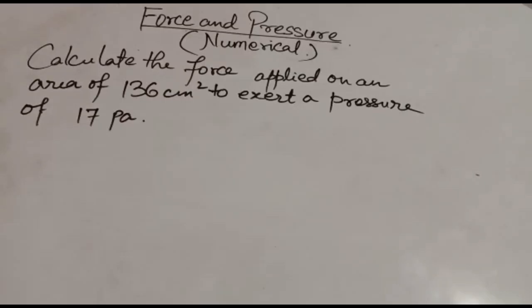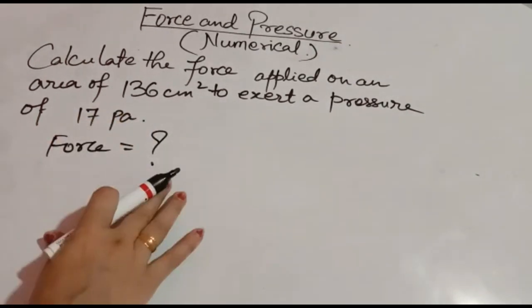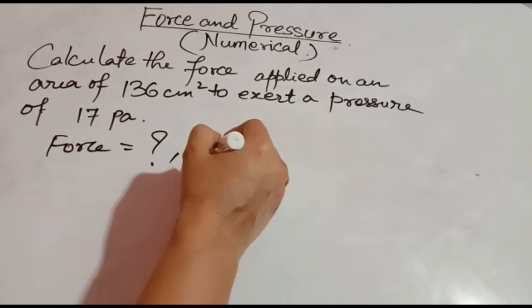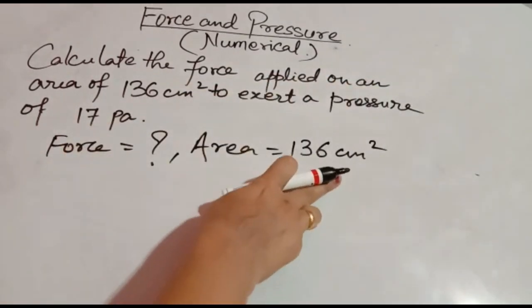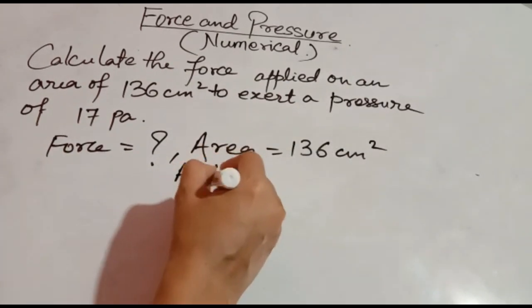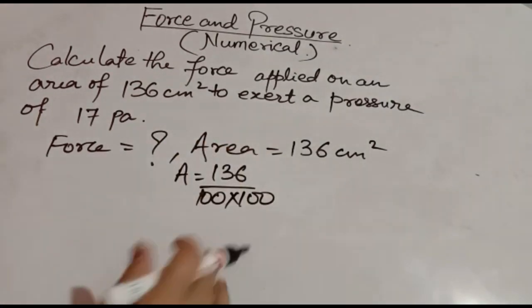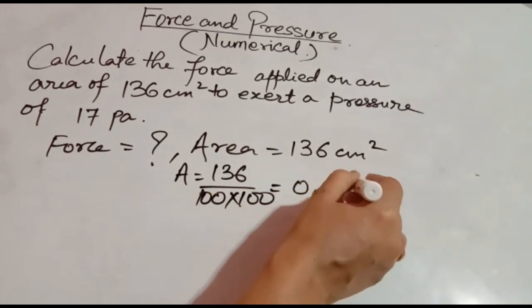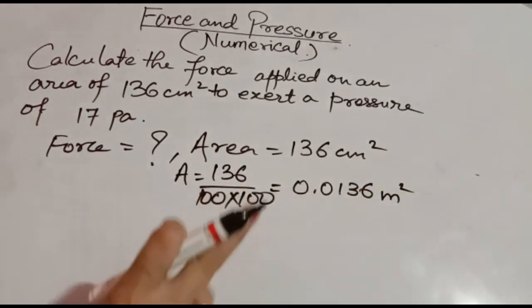Next question: calculate the force applied on an area of 136 centimeter square to exert a pressure of 17 Pascal. In this question, it is asking to find out force. Area is 136 centimeter square — again, centimeter square has to be changed to meter square. So area is equal to 136 divided by 100 into 100, which gives 0.0136 meter square.